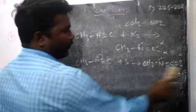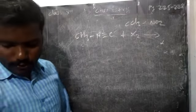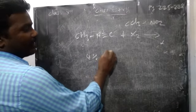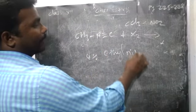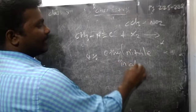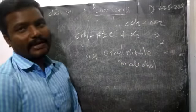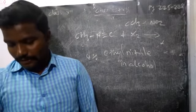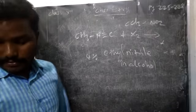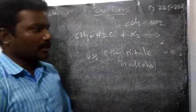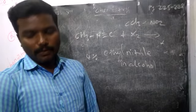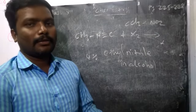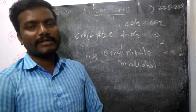Very important: 4% of nitroethane, that is ethyl nitrite, in alcohol medium is called sweet spirit. Spirit, we know, is alcohol. This is called sweet spirit — it is used in diuretics and also as a fuel. Next, nitrobenzene — we have finished the nitro compound alkane, and nitrobenzene.